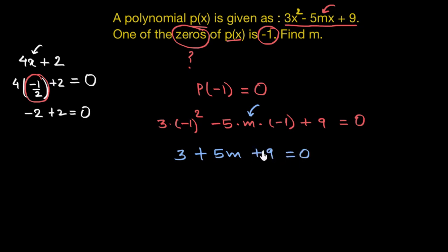9 and 3 would together give me 12. So 12 plus 5m is equal to 0. On subtracting 12 from both the sides, our equation would reduce to 5m equals to negative 12. And finally, now on dividing both sides by 5, m would be equal to negative 12 upon 5. Hence, the value of m is negative 12 by 5.